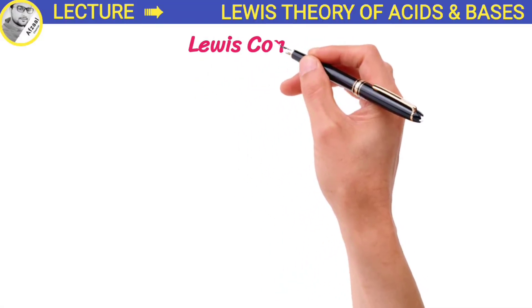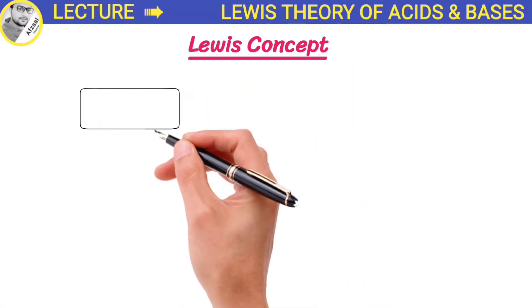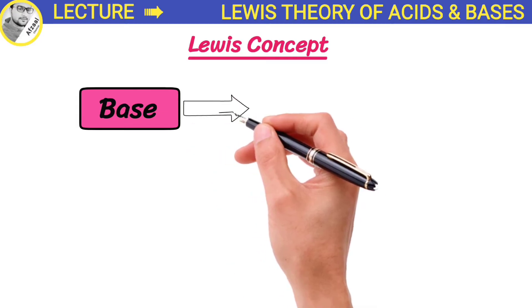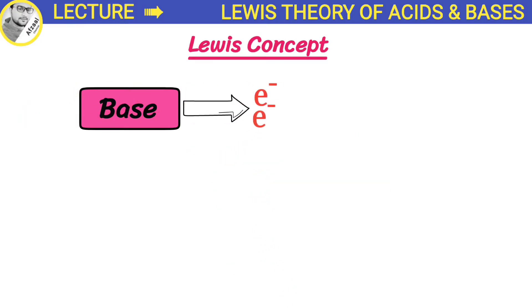According to the Lewis concept, bases are substances that can donate a pair of electrons, while acids are substances that can accept a pair of electrons.